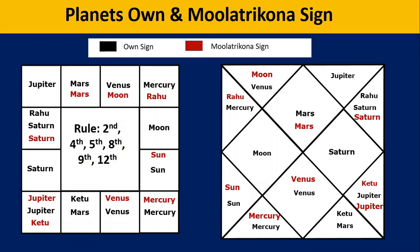Let's take another example: what Jupiter thinks about Moon. What is the Mulatrikona sign of Jupiter? It is Sagittarius. From Sagittarius, counting the position of Moon: 1st, 2nd, 3rd, 4th, 5th, 6th, 7th, 8th. Is the 8th mentioned in the friendly positions? Yes. So Jupiter treats Moon as friend.